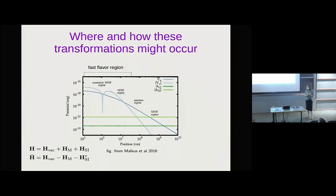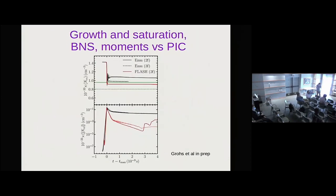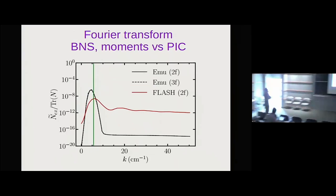Q (George): I was fascinated by the slide comparing the moment method to the particle-in-cell calculation for the off-diagonal quantum coherence density matrix elements. I see that particle-in-cell predicts a persistence of that coherence that's lost in the moments. Is this related to the cascade of power to smaller and smaller momentum scales? If there were more moments in the tower, would you get something closer to the particle-in-cell? A: If you have an infinite set of moments, then you should reconstruct the particle-in-cell.